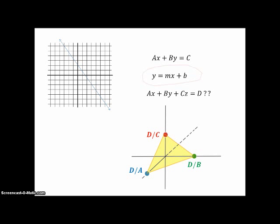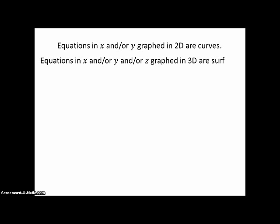So what we're going to do is we're going to take this other form in two dimensions, and we're going to morph it using vectors into an equation of a line in three dimensions using vectors. Because equations in X and or Y graphed in two dimensions are curves or lines, lines are straight curves, and equations in X and or Y and or Z graphed in three dimensions will be surfaces, not lines or curves.